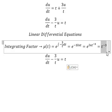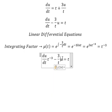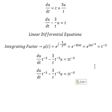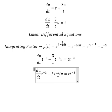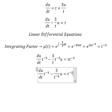We need to multiply both sides by this integrating factor. So on this side we have negative three over t to the power of negative four, and on this side we have t to the power of negative two.